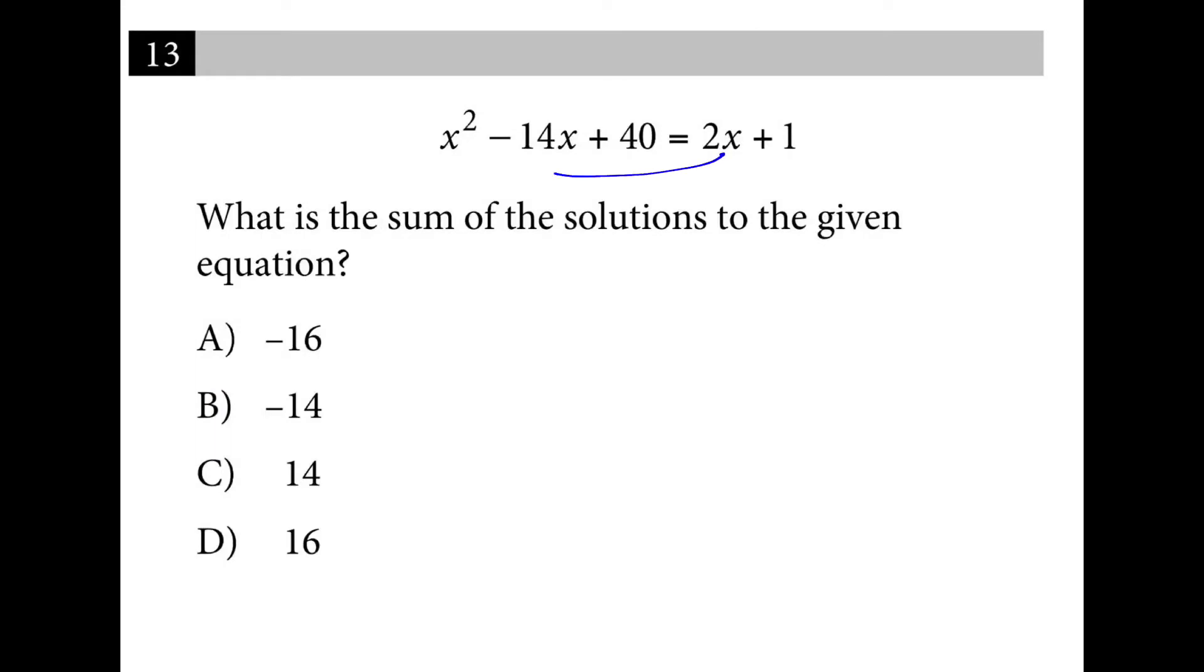I want to solve this for 0, so I'm going to move the x and the number to the left. So I have x squared minus 16x plus 39 is equal to 0. Factors of 39 that add up to 16 is going to be 13 and 3. They're both going to be negative, which means my two answers are positive. And they want the sum of those answers, so 13 plus 3 is 16.